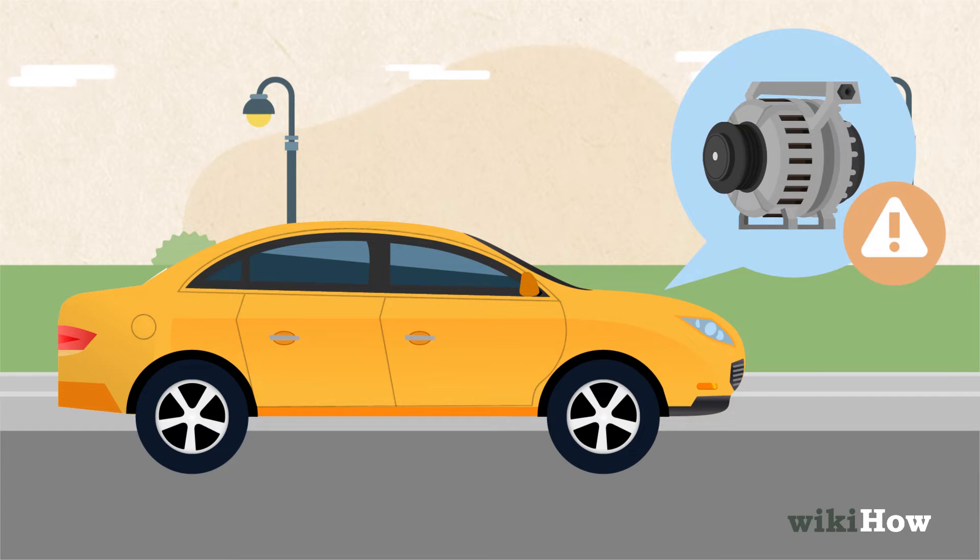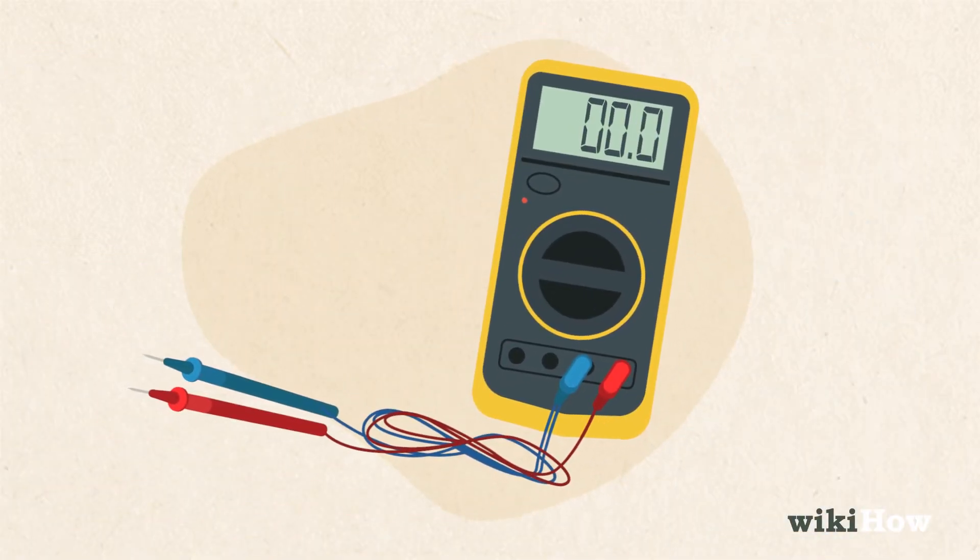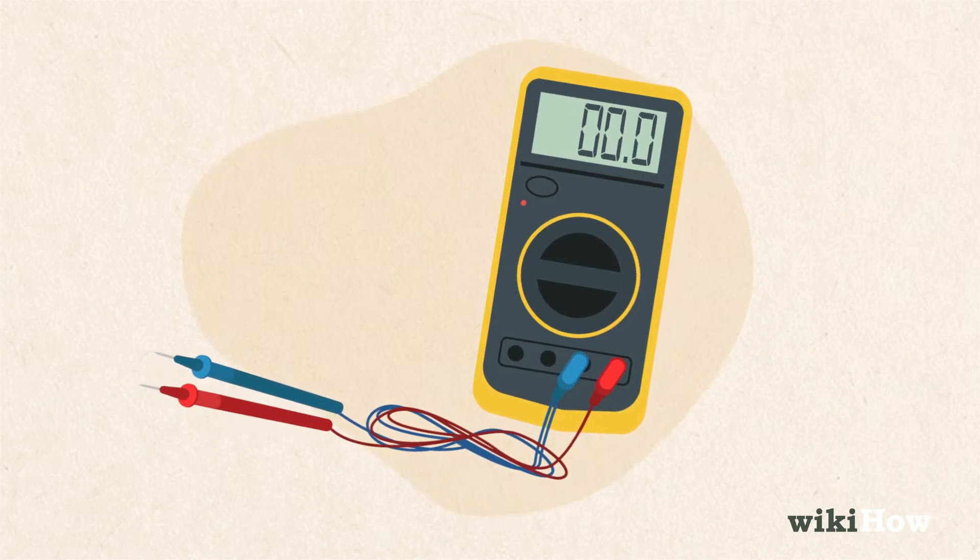Fortunately, you can easily test your car's alternator to see if it's working using a voltmeter, which is an instrument that measures voltage.